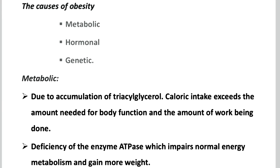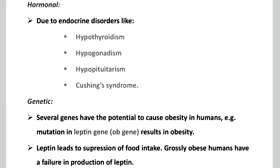The causes of obesity can be classified into metabolic, hormonal, and genetic. The metabolic cause is mainly accumulation of triacylglycerols or triglycerides — simply excess fats — and a deficiency of the enzyme ATPase, which affects normal energy metabolism and leads to more weight gain. The second reason is endocrinal disorders like hypothyroidism, hypogonadism, hypopituitarism, and Cushing syndrome. The third reason is genetic: mutation in the gene coding for the protein leptin. The leptin gene is called the OB gene, and any mutation affects leptin synthesis, which maintains appetite, thereby leading to increased food intake and resulting in obesity.